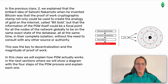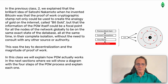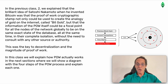In the previous Class 2, we explained that the brilliant idea of Satoshi Nakamoto when he invented Bitcoin was that the Proof-of-Work cryptographic stamp not only could be used to create the analogy of gold on the internet called Bitgold, but that the information of the Proof-of-Work itself could be a focal point for all the nodes of the network globally